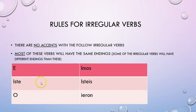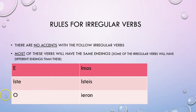You'll notice that in the yo form I've kind of taken the AR ending, then I go to an ER or IR ending, and then back to an AR again. Just make sure that you memorize these endings and that you remember that there are no accents.